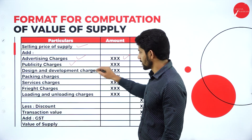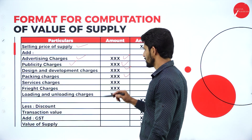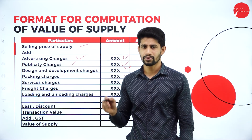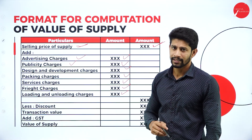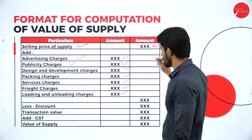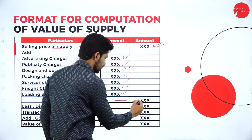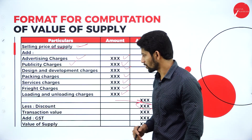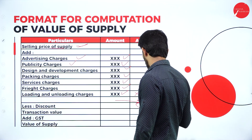Additional expenses to add include freight charges, loading and unloading charges, and any other expenditure incurred with respect to the supply of the product or machinery. All these additional expenditures are supposed to be added to the selling price. Once you add all the expenses to the selling price, you will get a total.